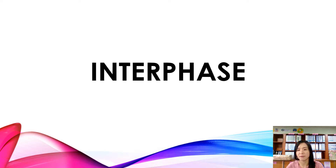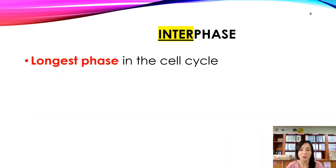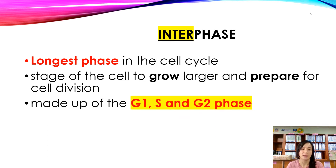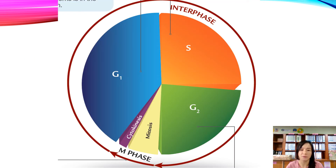Interphase is the longest phase in the cell cycle. It is the stage for the cell to grow larger and prepare for cell division. Interphase consists of three phases: G1, S, and G2. As you can see from this diagram, interphase occupies the longest portion of the cell cycle.